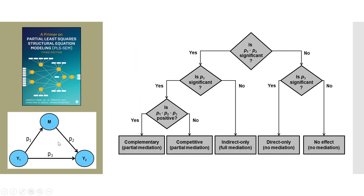Now let's work through this flowchart. Is p1 and p2 significant? Yes. Is p3 significant? Yes. Is the product of p1, p2, p3 positive? Yes — then it is known as complementary partial mediation. If p1 and p2 are significant and p3 is significant, but the product of p1, p2, p3 is negative, then it is known as competitive partial mediation.